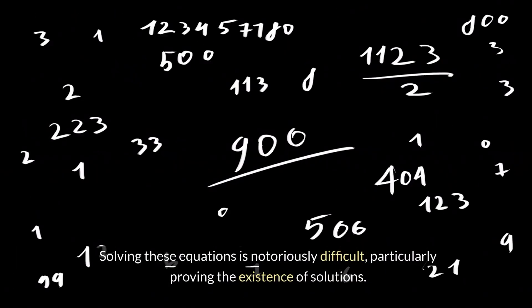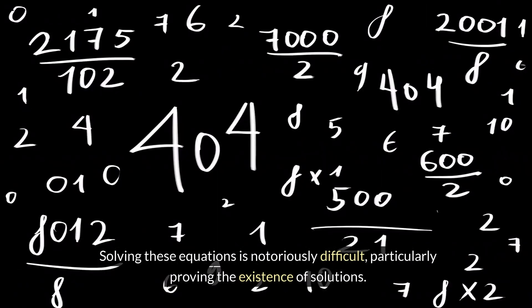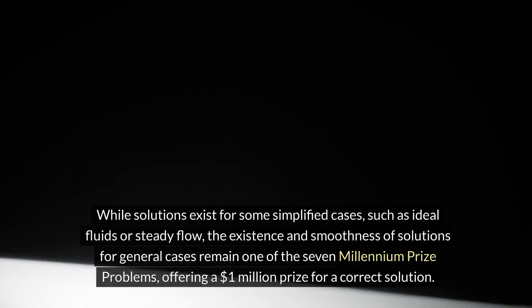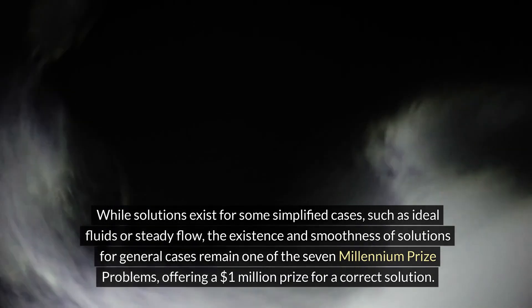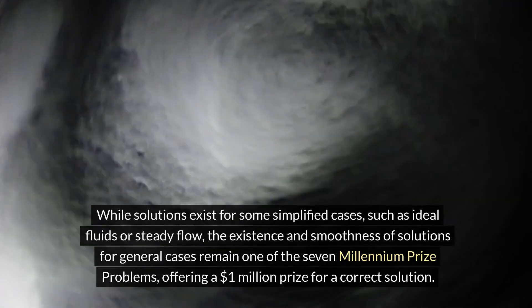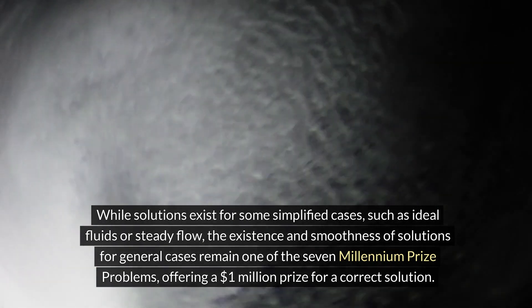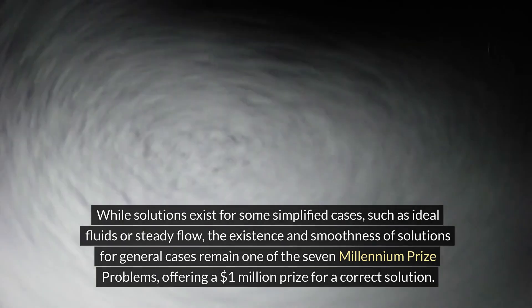Solving these equations is notoriously difficult, particularly proving the existence of solutions. While solutions exist for some simplified cases, such as ideal fluids or steady flow, the existence and smoothness of solutions for general cases remain one of the seven Millennium Prize problems, offering a $1 million prize for a correct solution.